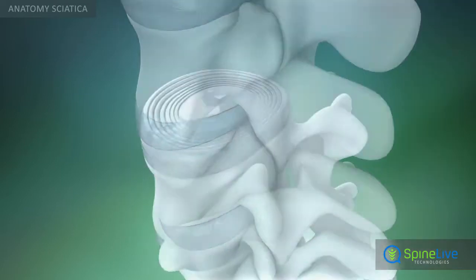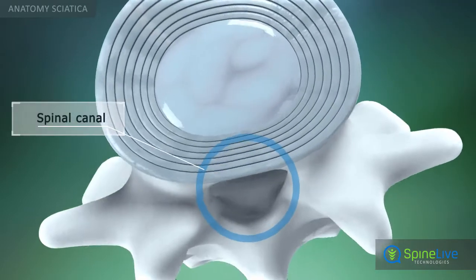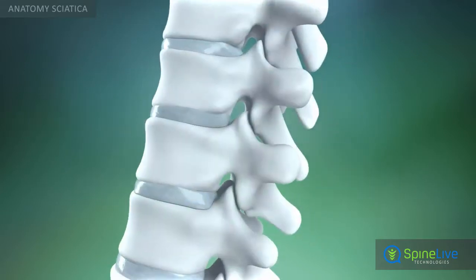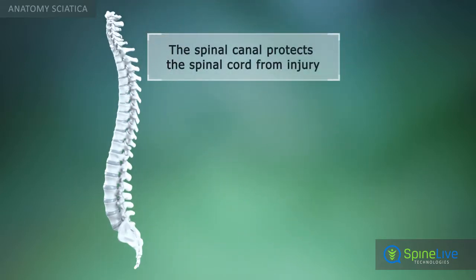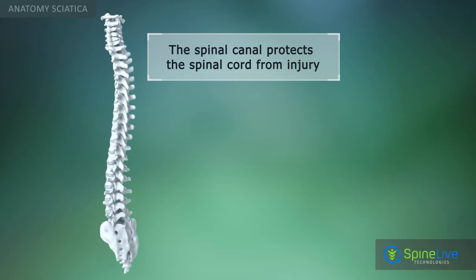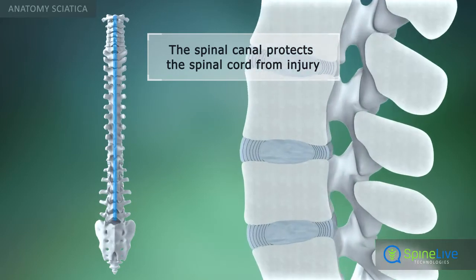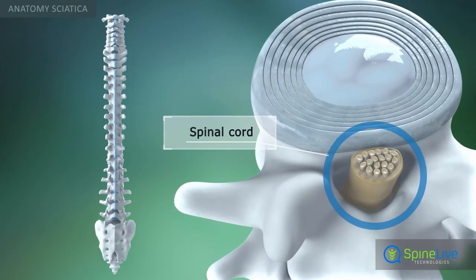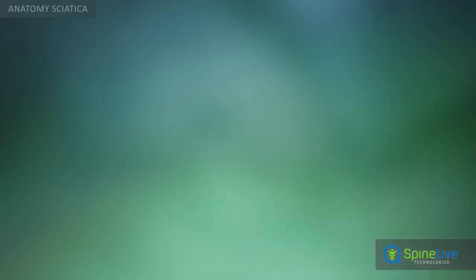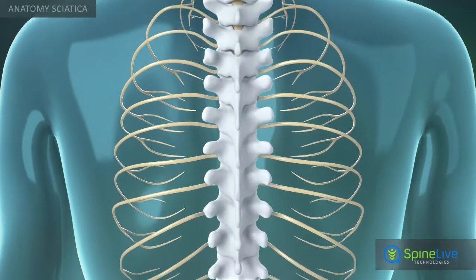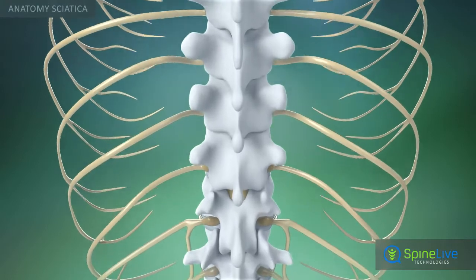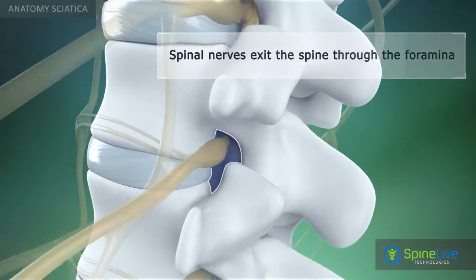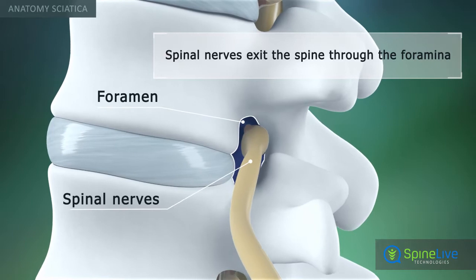Behind the vertebral bodies is located a vertical tunnel called the spinal canal. The spinal canal contains the spinal cord and protects it from injuries. The spinal nerves branch off your spinal cord in pairs and travel through small openings between your vertebrae, called intervertebral foramina.